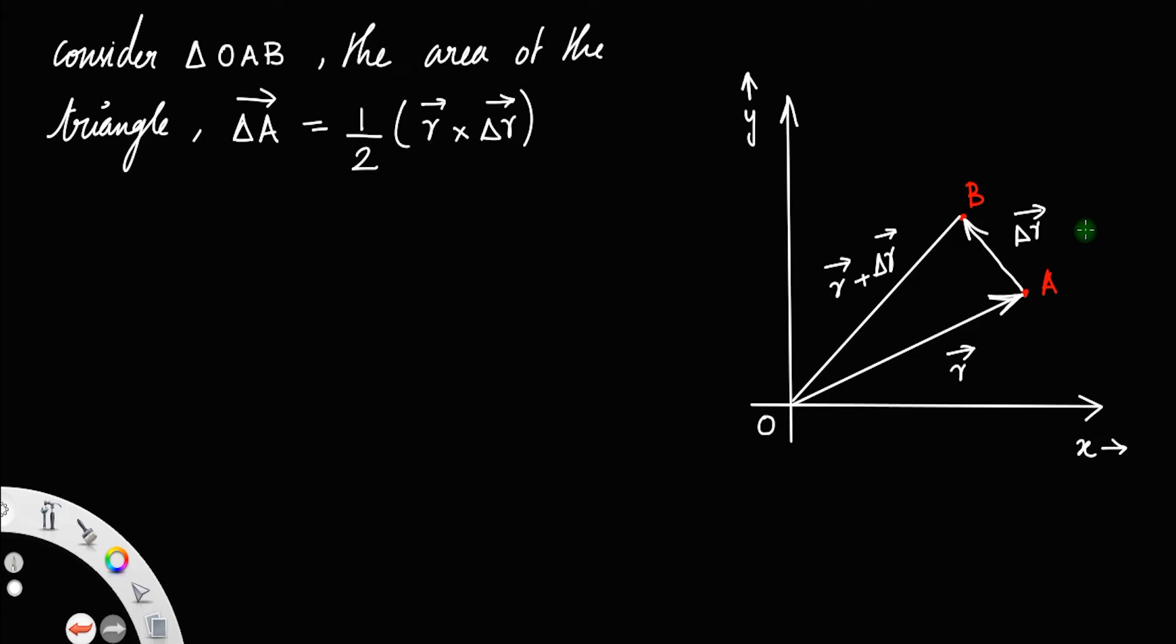Now, you know, if v is the velocity of the particle, it moved from A to B. Let v be its velocity, then we have velocity is equal to displacement by time, delta r divided by delta t, where t is the time taken by the body to move from A to B.